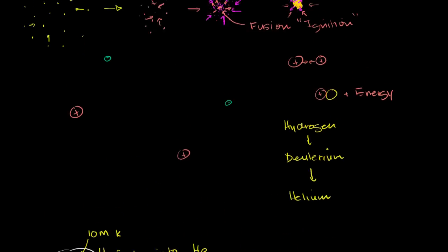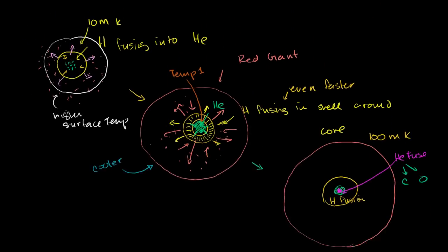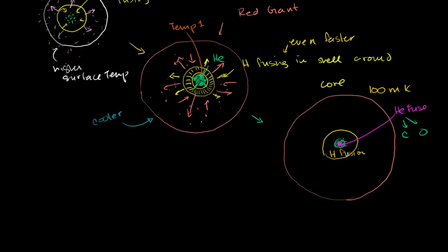Looking at the periodic table: hydrogen has one proton and no neutrons, and gets fused in the main sequence into helium, which has two protons and two neutrons — you need four hydrogen atoms to get one helium-4. Then once we reach 100 million Kelvin, helium can start being fused. Roughly three helium atoms can fuse to form carbon, and four of them as starting raw material gets you to oxygen. So we're starting to fuse heavier and heavier elements, building a carbon and oxygen core.